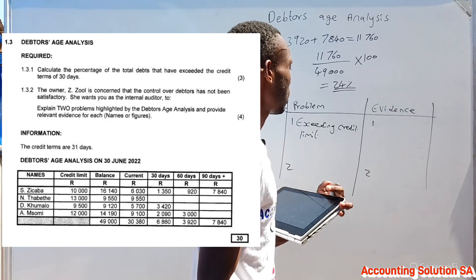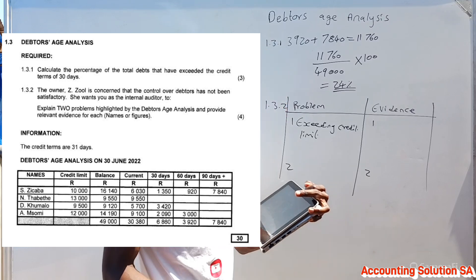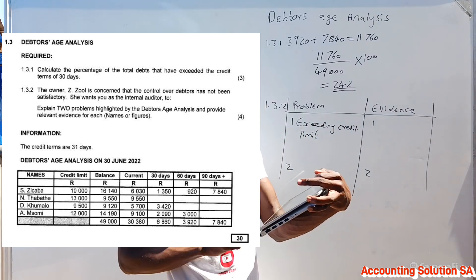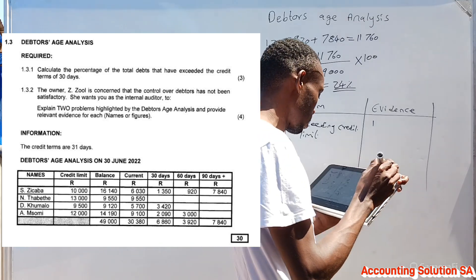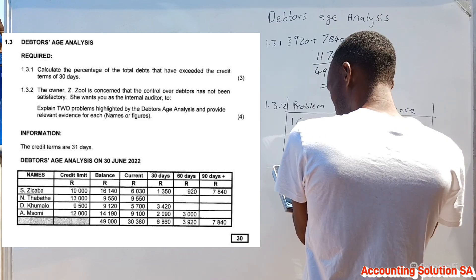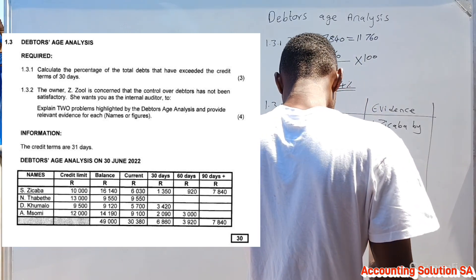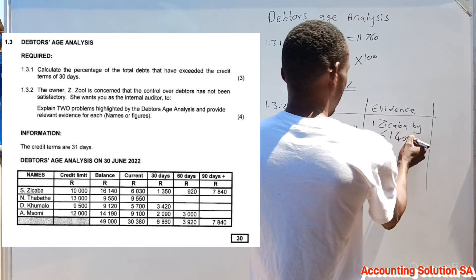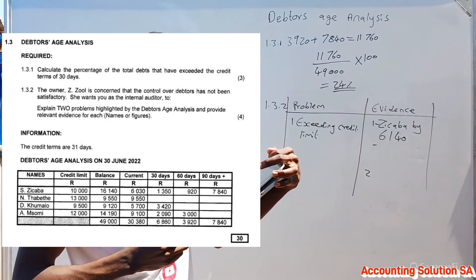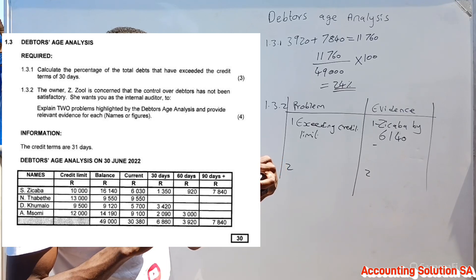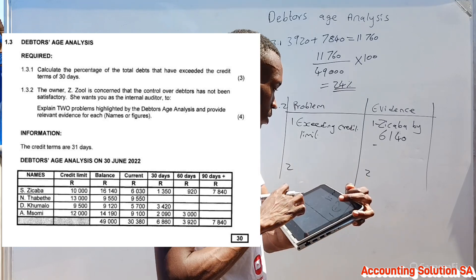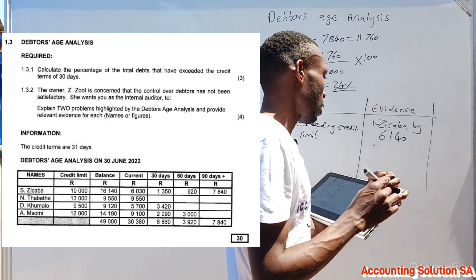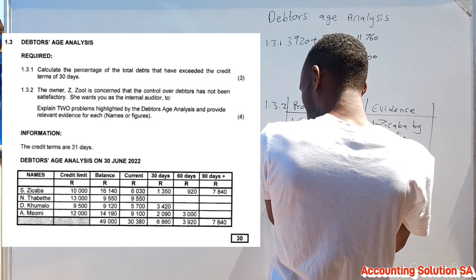Exceeding a credit limit is a significant problem. For evidence, let's check who has exceeded their credit limit. Number one is Zikaba — the credit limit was 10,000 but the balance is 16,140, so Zikaba exceeded the credit limit by 6,140. Another client who exceeded is Soeasy, whose credit limit was 12,000 but the balance is 14,000, meaning this person exceeded the credit limit by the difference between 12,000 and 14,190, which gives us 2,190.